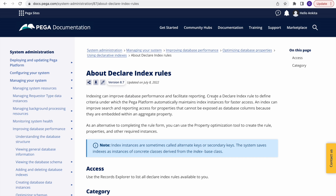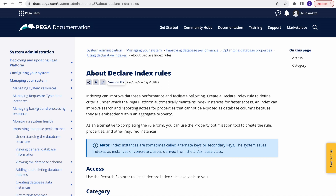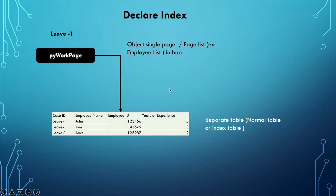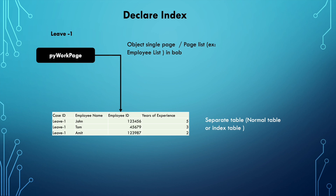So Declare Index — this is a little different from Pega's database. We usually use this for reporting purposes. Indexing can improve database performance and facilitate reporting. Let me draw a rough diagram to explain. Let's say your manager asked you to collect a list of all holidays for all employees and create one single request in Pega — not many requests. So let's say we created one leave request, and in that application we entered leave details for 10 employees.